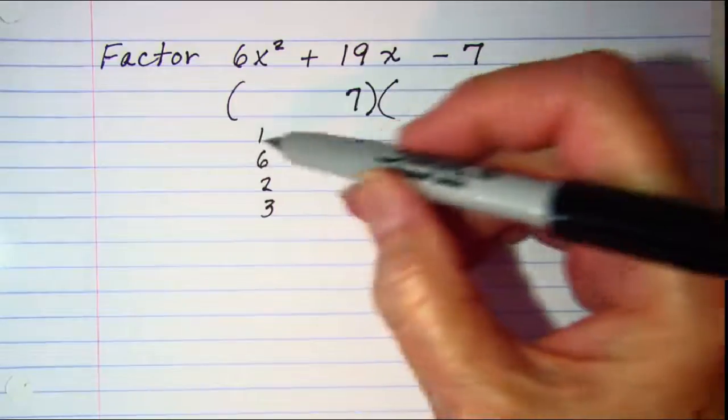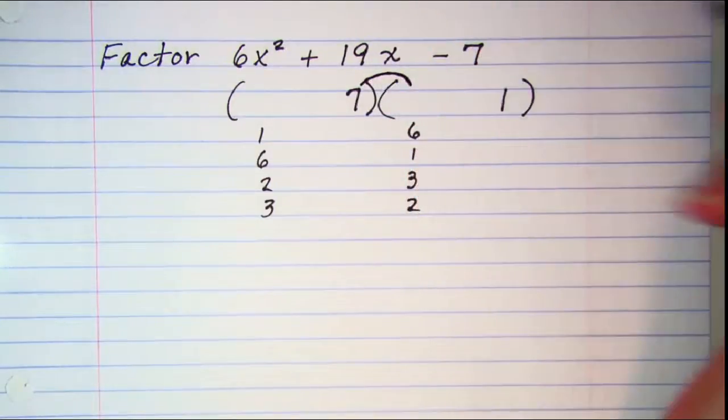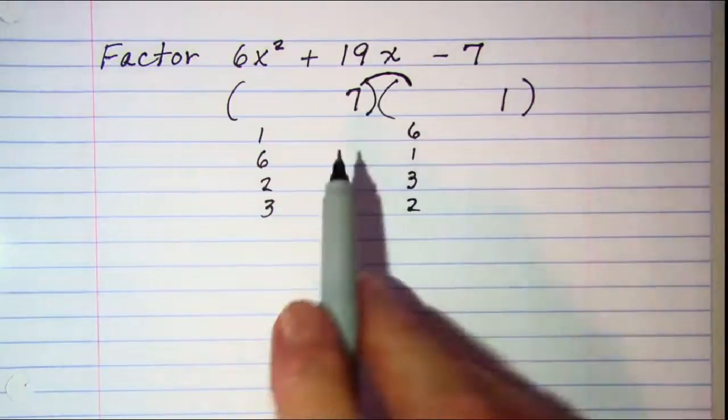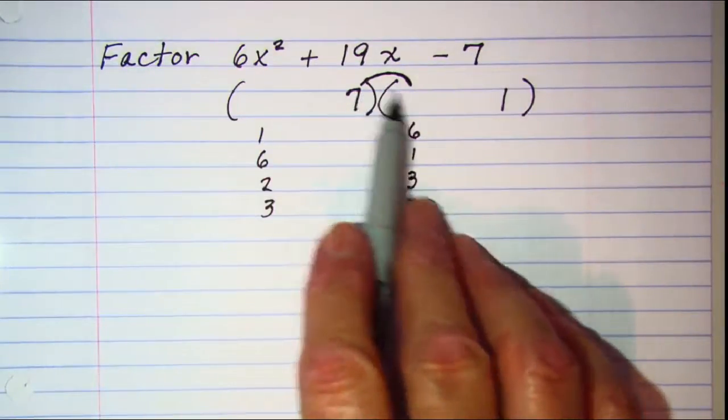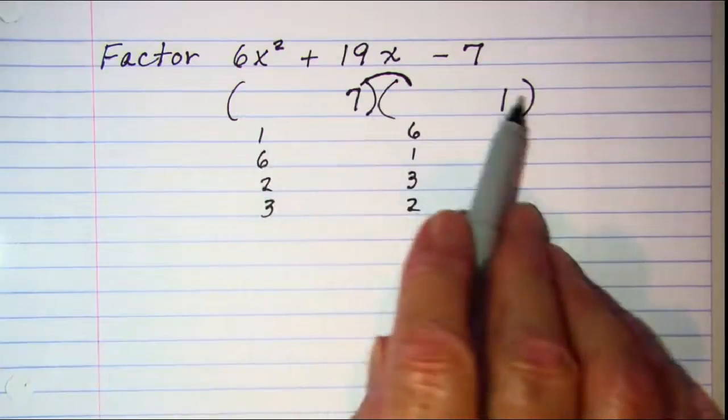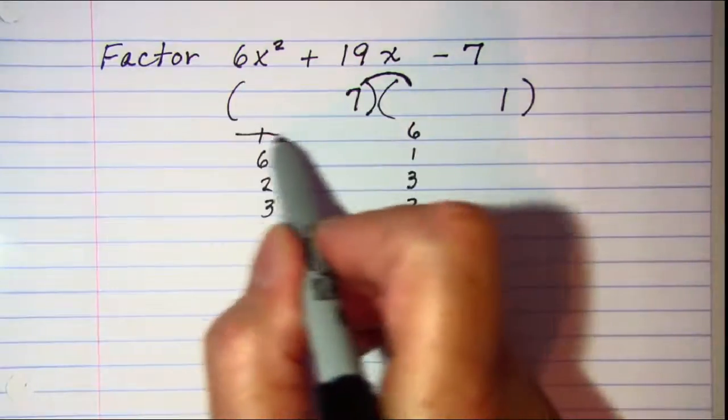Now for the 1 and 6 choice, my inner product is 42. That's probably going to be too big, but we can go ahead and look at it anyway. 42 and my outer product is 1. So the difference there is 41. So this doesn't work.